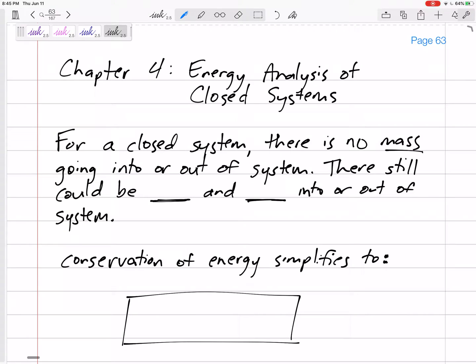Okay, so Chapter 4 is all about closed systems, energy analysis of closed systems. We're going to be tracking, accounting for all the energy in closed systems. Closed is a little bit easier than open, so let's start with closed in Chapter 4, we'll do open in Chapter 5. But with a closed system, there's no mass going in or out, but there still could be heat and work going into or out of the system.